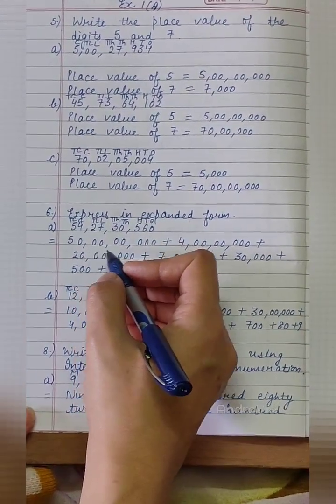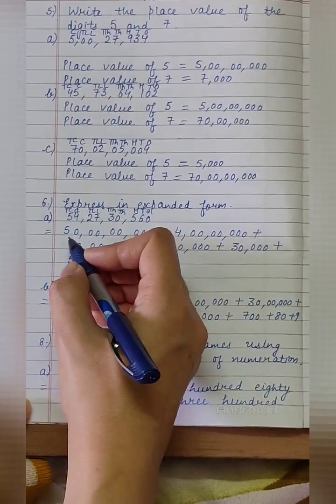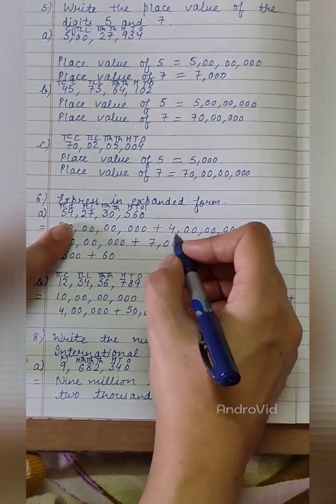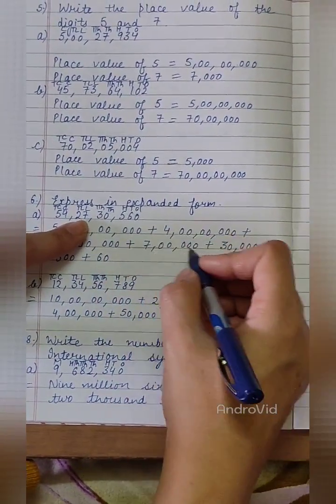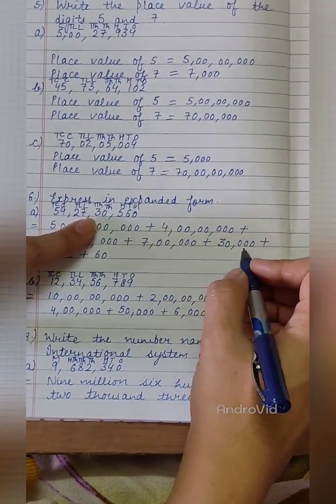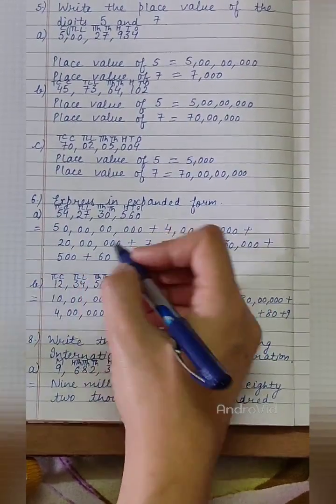So, according to the position of the digits, it will be written as 50 crore plus 4 crore plus 20 lakhs plus 7 lakhs, plus 30,000, plus 500, plus 60.